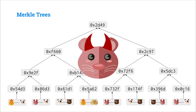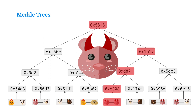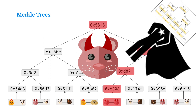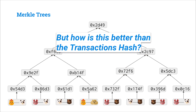Now, if Mallory wants to tamper with this Merkle tree and change a transaction from her sending money to Bob to her sending money to herself, it's going to change the hash of her transaction. And when you hash that transaction together with 174F, it's going to change their parent hash. And when you hash D871 together with 5DC3, you're going to get a different parent hash again. These changes propagate all the way up to the Merkle root, and everyone will be able to verify that something changed in the tree. But you could have done the same thing with a simple transactions hash — so how is this any better?